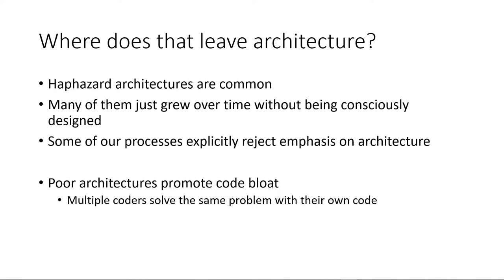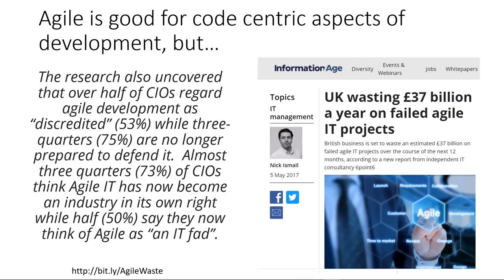Current software development practices often don't solve this problem and might even make it worse. Code-centric developers like agile methodologies — agile makes responsibilities pretty clear and helps developers know what they need to do next; it also helps keep them accountable. But I see articles like this one and I conclude that while agile is a reasonable choice for getting code out, the bigger picture is more complex. Over half of CIOs in Britain think agile is discredited and a lot of them seem to think it's become a racket.